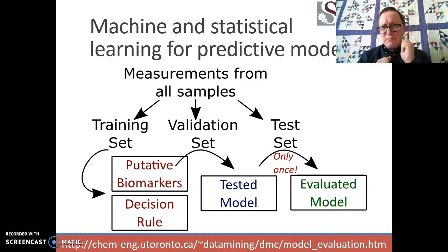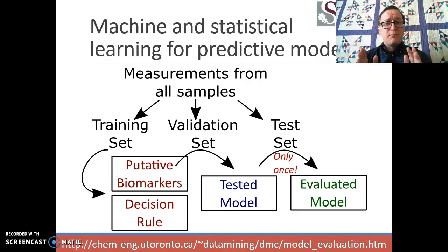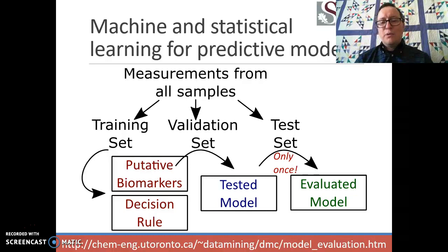Once we have a satisfactory model at the validation stage — our selected model — we then, and only then, test it in the test set. Hopefully we find good separation between positives and negatives, with few false positives and few false negatives. From that we can publish an evaluated model. People who reuse their test set produce artificially good-looking models that are useless in other contexts, so it's very important that the test set be used only once.